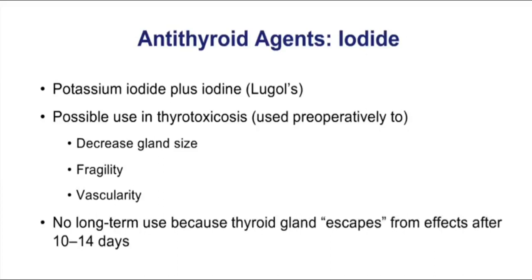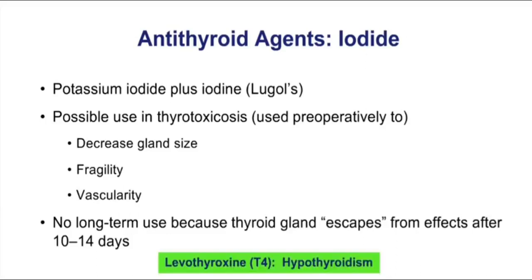One of the most commonly prescribed drugs in the U.S. is levothyroxine, which is T4, commonly used for replacement therapy. That could be a patient with hypothyroidism, or it could be a patient who had hyperthyroidism, was treated with iodine-131, and now needs replacement therapy with levothyroxine.